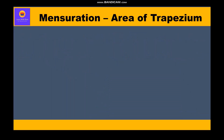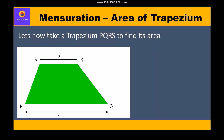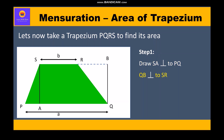Let us take a trapezium PQRS to find its area. Step 1: Draw SA perpendicular to PQ and QB perpendicular to SR. Clearly, SA = BQ = height of the trapezium, say h. Then join vertices S and Q.